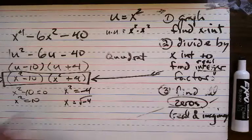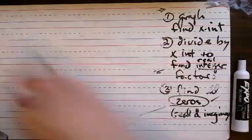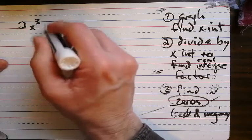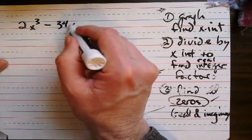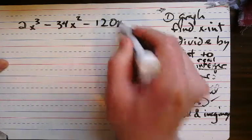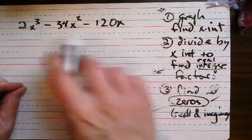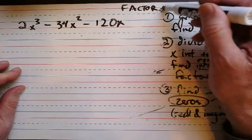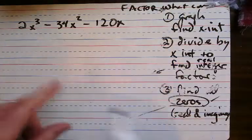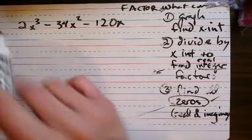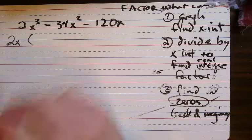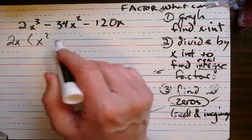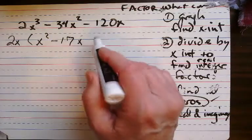Let's do everything again. How about 2x to the third minus 34x squared minus 120x? Now, here I can see that there's something common — there's an x common, and also a 2. So I'm going to factor out what's common. I'm going to take out 2x. What's left: x squared, minus — what's half of 34? 17 — minus 17x, and that would be 60.